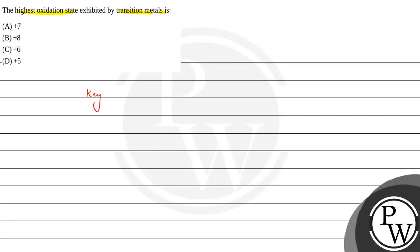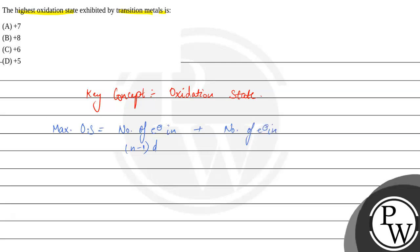What is the key concept of this question? Oxidation state. So, what is the maximum oxidation state formula? The maximum oxidation state equals the number of electrons in (n-1)d plus the number of electrons in the ns orbital.